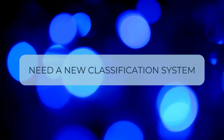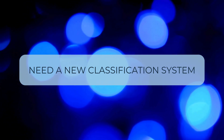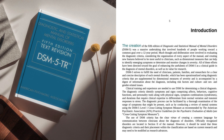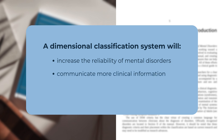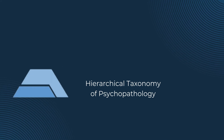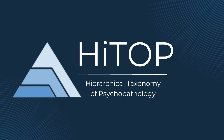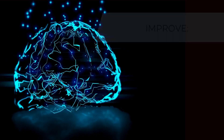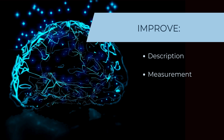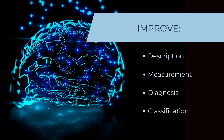Together, these limitations mean we need a new classification system. Even the DSM concedes in its introduction that a dimensional classification system will increase the reliability of mental disorders, communicate more clinical information to health professionals, and will likely supersede the traditional categorical approach in the future. The Hierarchical Taxonomy of Psychopathology takes a data-driven dimensional approach to classification, with the aim of overcoming these limitations and realizing the potential of dimensions to improve the description, measurement, diagnosis, and classification of mental illness.